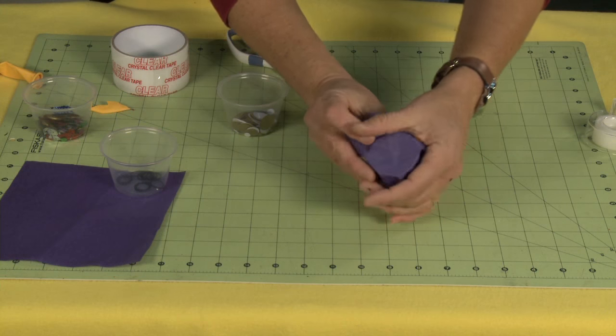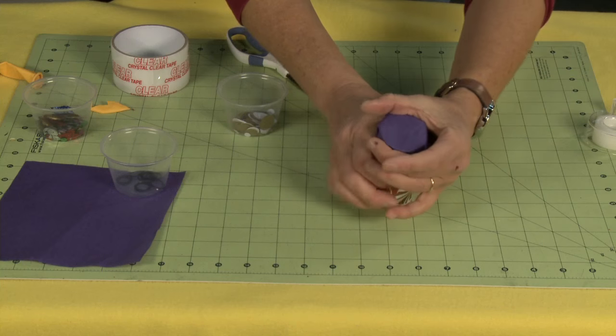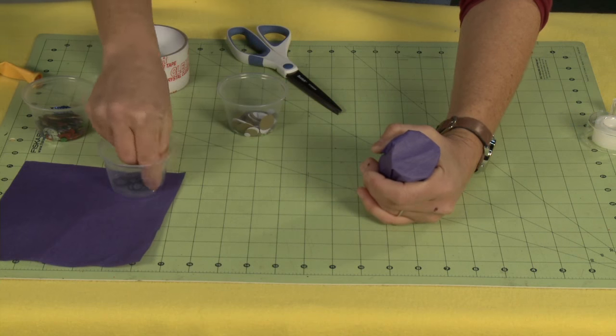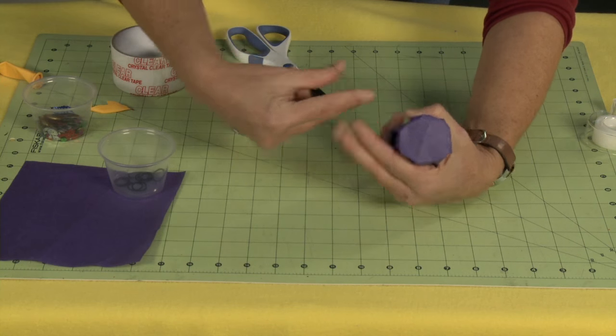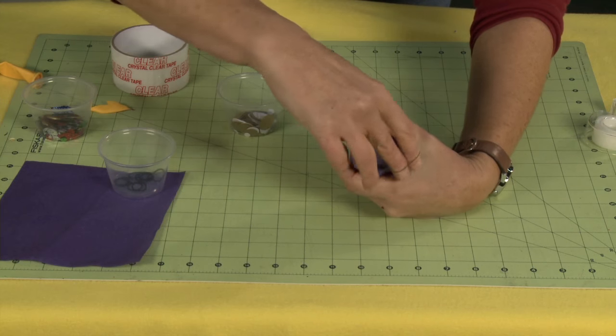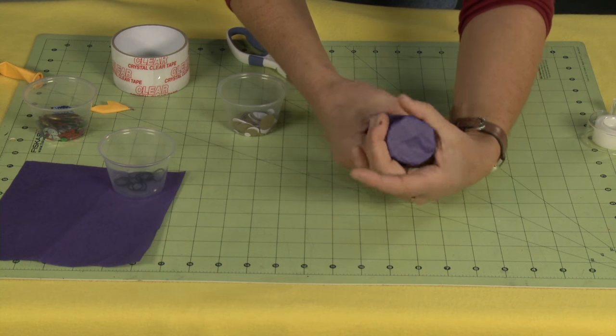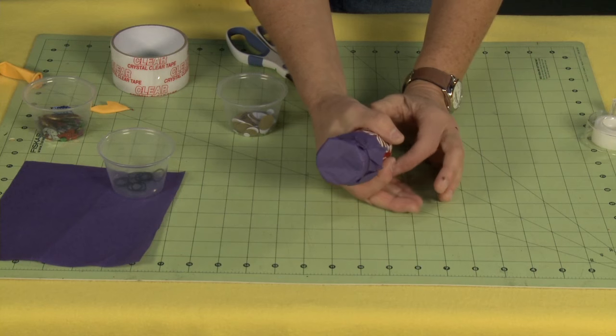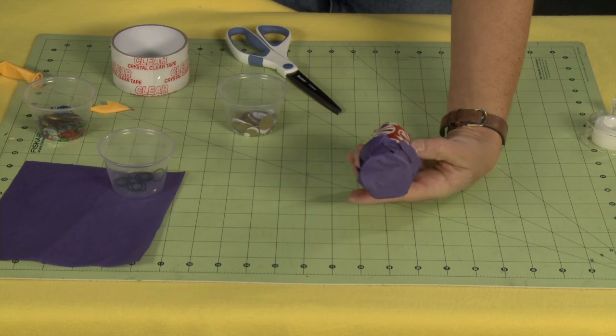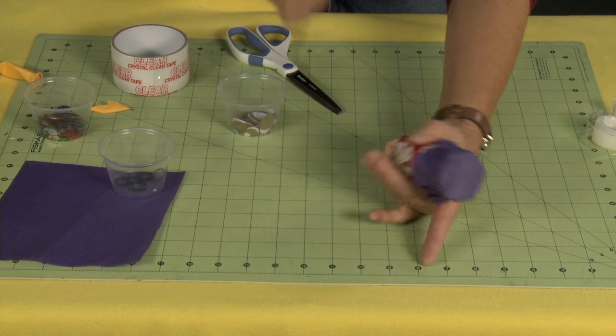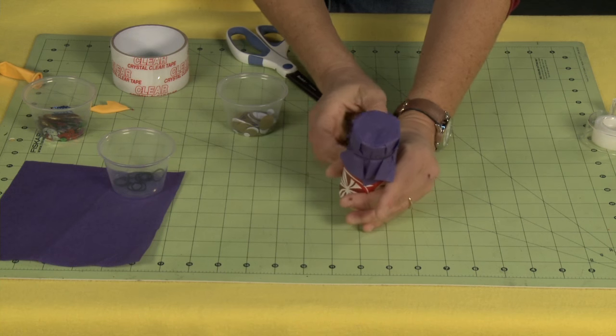Take your piece of tissue paper, put it over top. Just fold it down on all sides. And then I'm just going to use a little rubber band here. Now this is just a small rubber band. And I'm not going to make it too tight, I'm just going to loosely put it around the top. And that's going to keep it nice and secure and ready for whenever it is time to shoot it off.